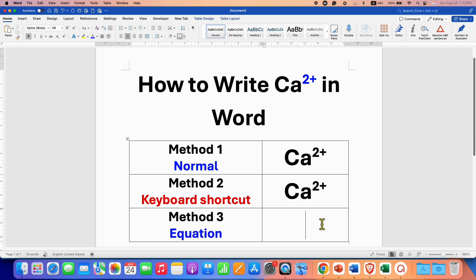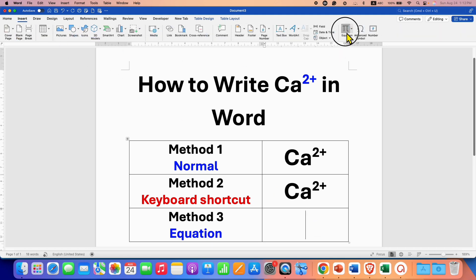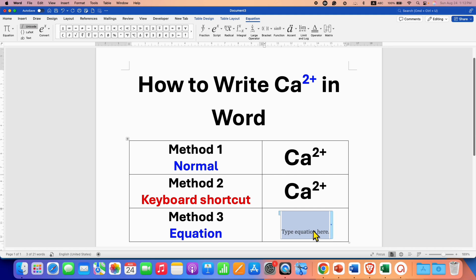In the last method, you will need to click on the Insert tab and then click on Equation. You will see a blue box along with the Equation tab. Click on Script and then select the first option, Superscript. In the empty boxes, just type Ca in the first box and 2+ in the next box.